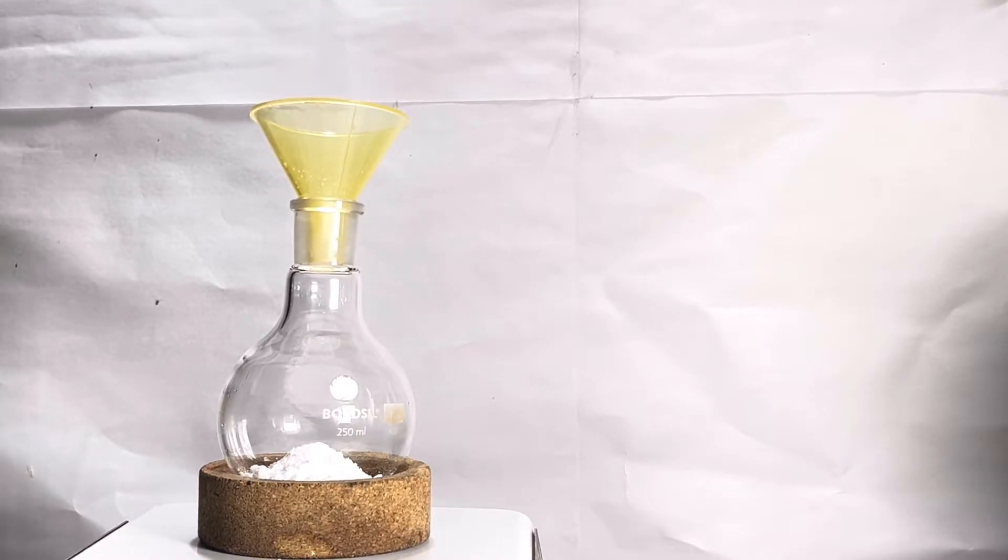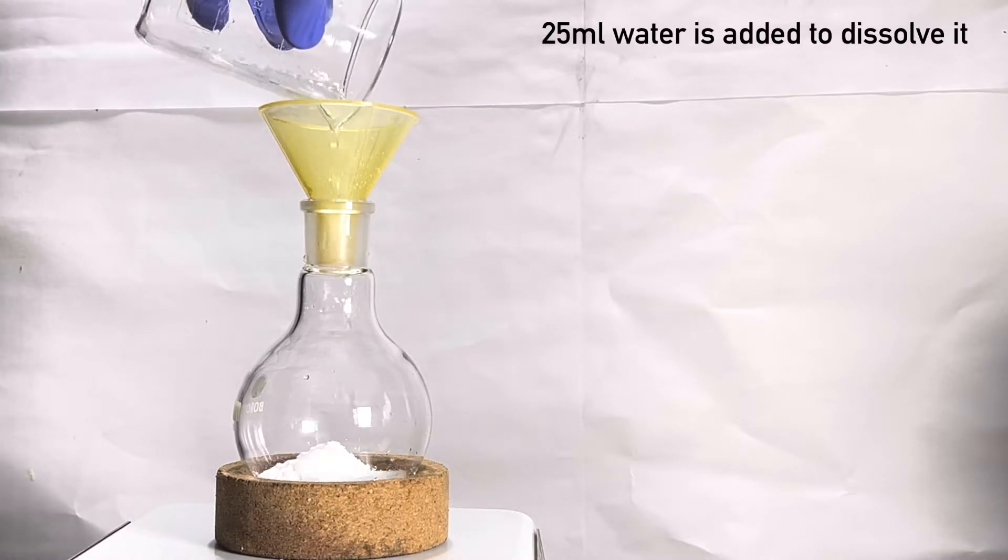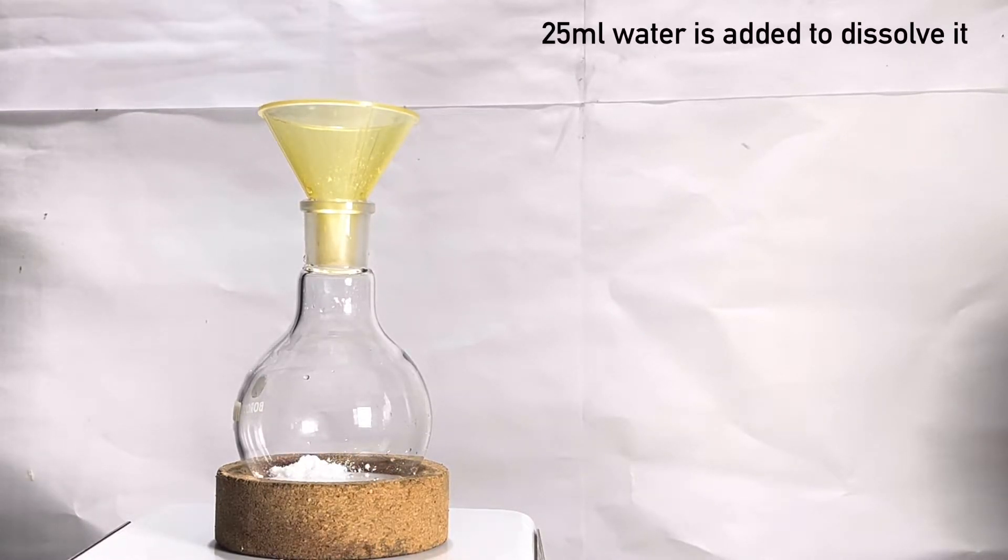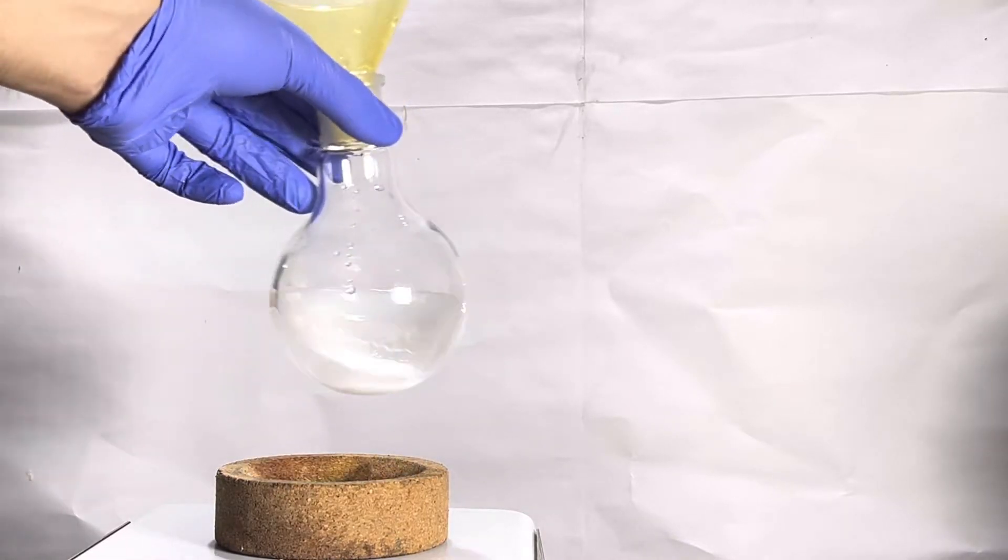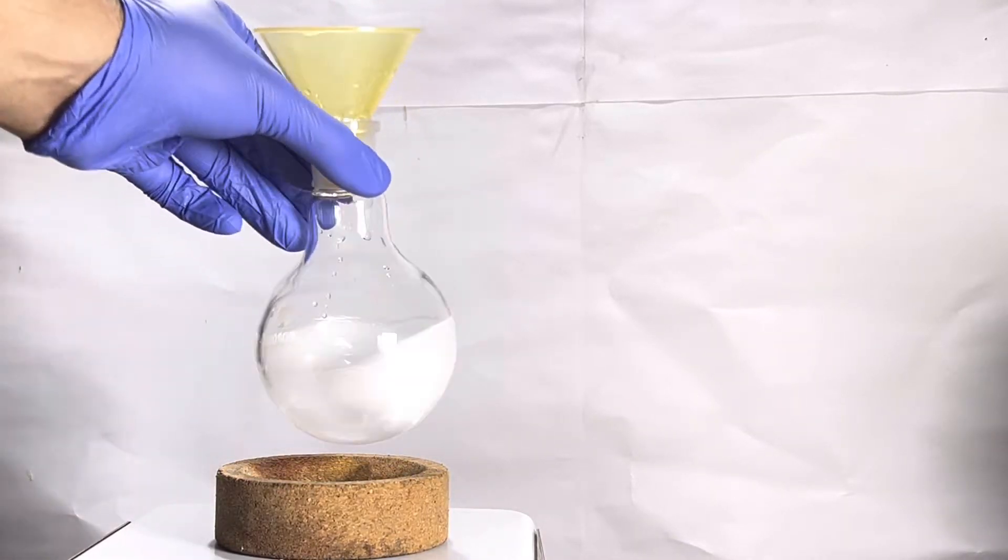Next we add 25 milliliters of water to the flask. Here you can see me adding the water in small portions in a circular motion in the funnel so as to rinse the funnel and wash down everything to the flask. Sodium cyanide is extremely soluble in water. The beaker which contained the sodium cyanide was also rinsed and poured into the flask.